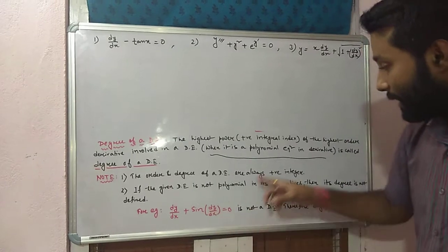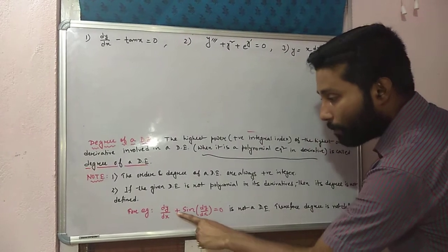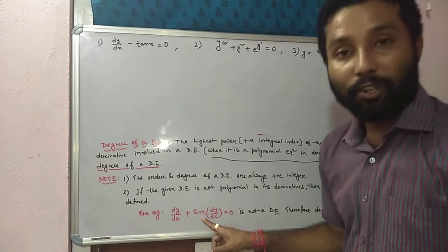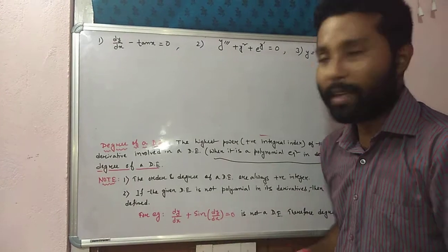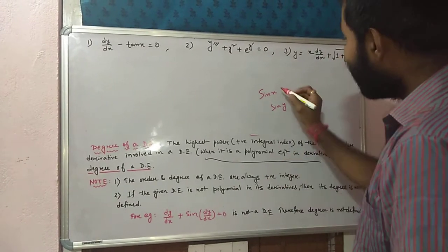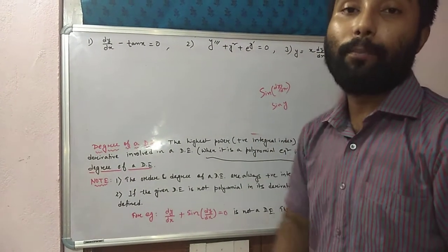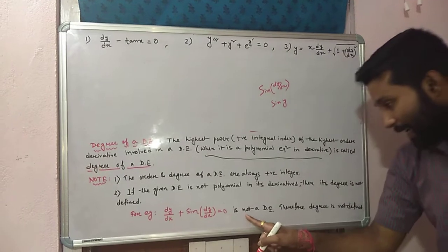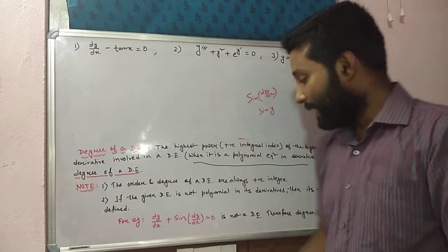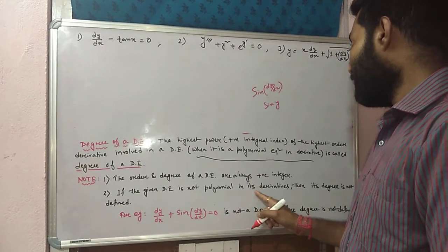For example, check karo. Polynomial in its derivative ka meaning kya hai? Consider: dy/dx + sin(dy/dx) = 0. Sine is a trigonometric function. Iska angle bhi derivative form mein hai. We can write sin(x), sin(y) — but agar sine ka angle dy/dx form mein hoga, then it is not a polynomial in its derivative. So degree is undefined. Degree undefined hoga jab equation polynomial in its derivative nahi hogi.